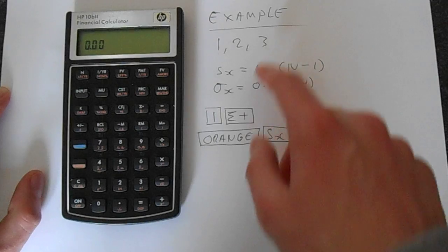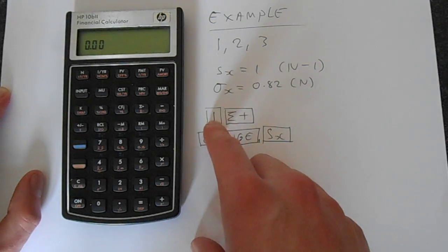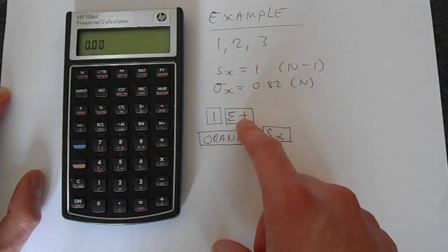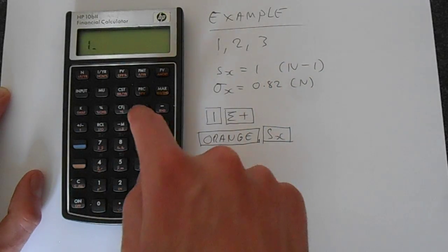So let's enter this data. The way we do it is we type the data point in and then press sigma plus. That adds it to the statistics memory. So if we press 1, sigma plus,